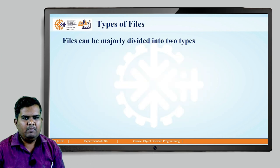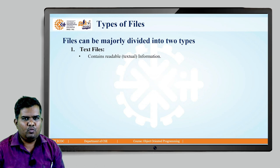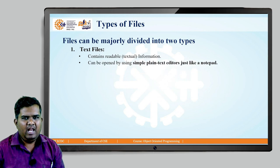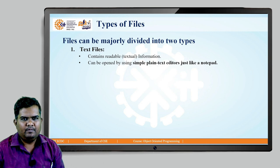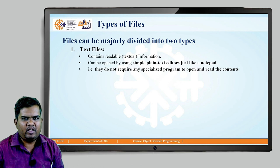Now let us understand the types of files. Files can be majorly divided into two types. The first type is called text files. Text files consist of readable or textual information. Whatever textual information is saved in a text file can be opened using a simple plain text editor like Notepad. Such text files do not require any specialized software to open and read their contents — a simple text editor is sufficient.